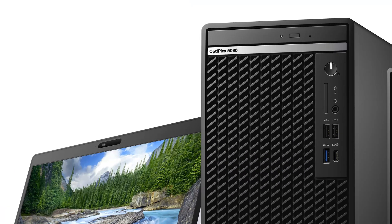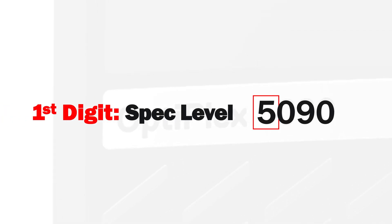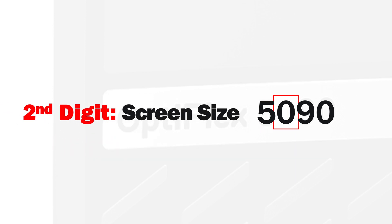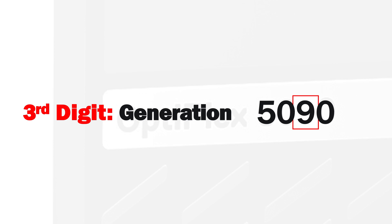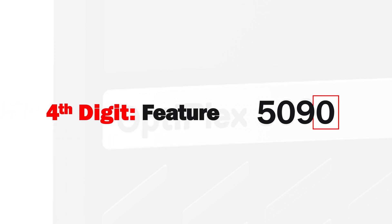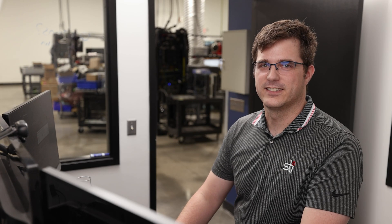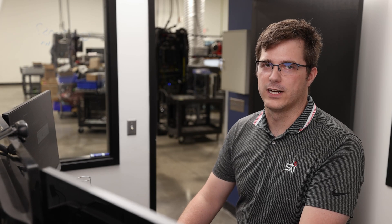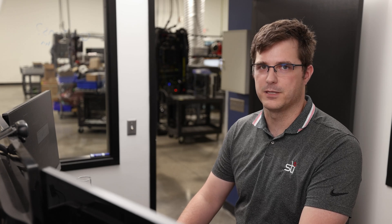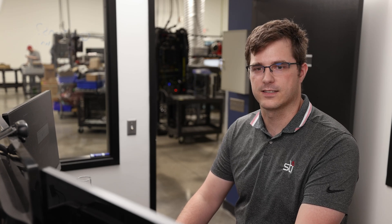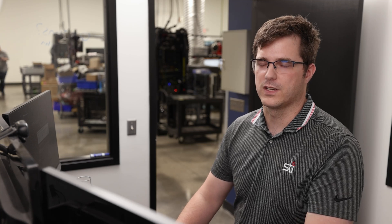The main things to know with these model numbers: your first digit is going to indicate your spec level, the second one indicates your screen size, the third digit is which generation of Dell system that is, and the fourth one is your feature indicator if there's something extra on it. Dell follows this naming pattern for pretty much all of their client systems — your Inspirons, Latitudes, Optiplexes, XPS systems — all of those are going to use something similar to this.